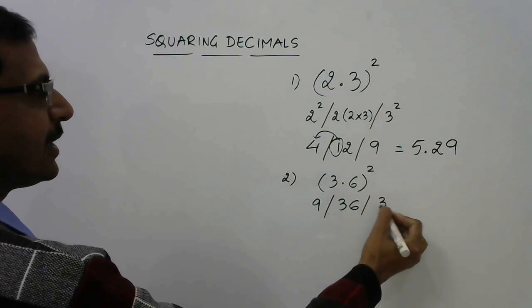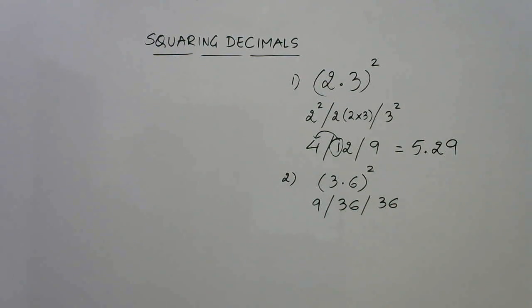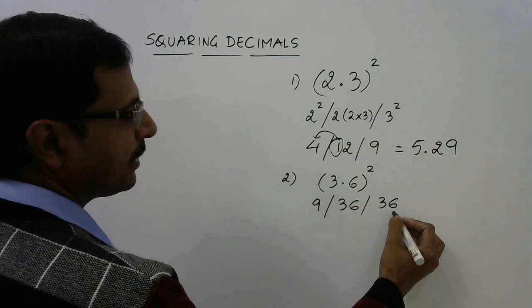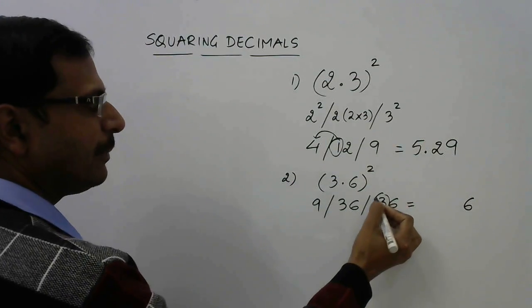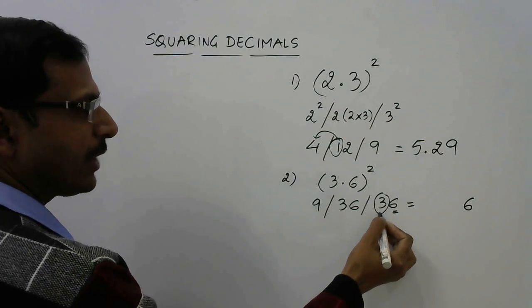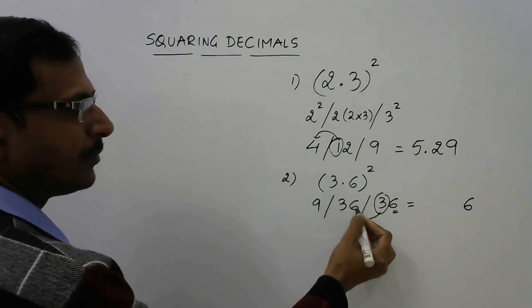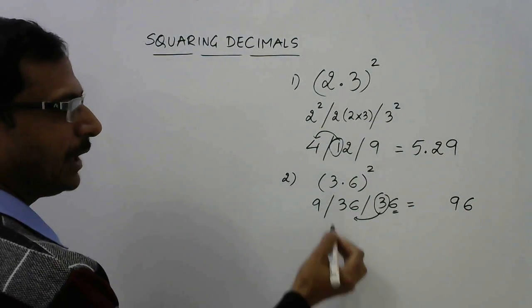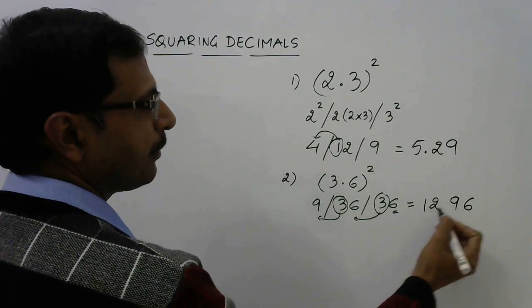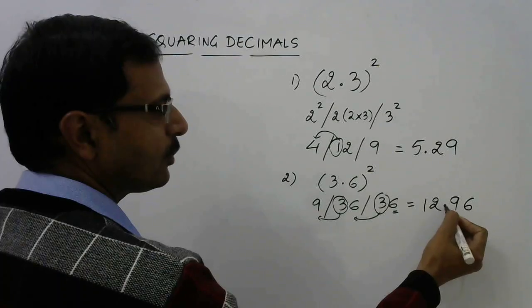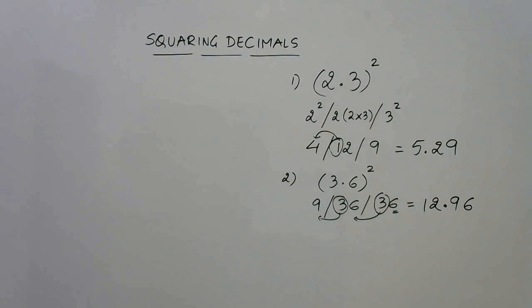And 6² is 36. So I have written the three numbers and now start retaining the units place and carrying forward the tens digit. Starting from here you have 6 which will be retained and 3 will be carried forward. If you carry forward this 3, this will become 39, so 9 will be retained and 3 will be carried forward. 9 plus 3 equals 12. Put a decimal two digits from the right side, you have 12.96 as the square of 3.6. I am sure with this example you must be feeling more comfortable with this method.